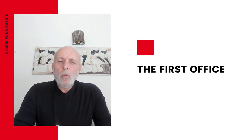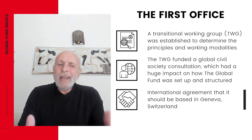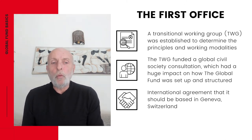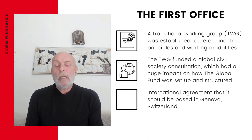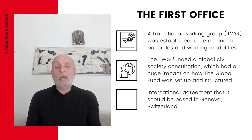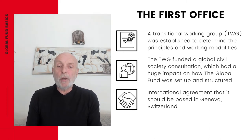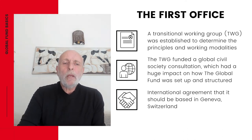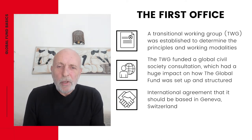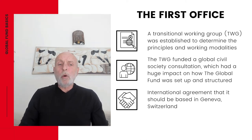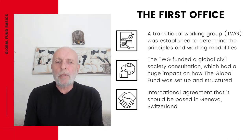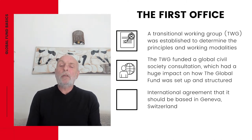Once the idea of a global fund had been agreed, the next task was the massive undertaking to set up a global institution. An interim office and Transitional Working Group, commonly referred to as the TWG, was established in Brussels, Belgium in a highly pressurized environment as they set about designing mechanisms to manage and disperse billions of the world's money. As part of the process to develop the principles and working modalities, the TWG funded a global civil society consultation, which included a worldwide electronic consultation and culminated in a global meeting of around 150 participants that had a massive impact on how the Global Fund was set up and structured.